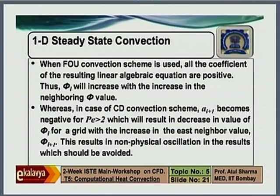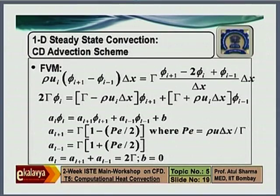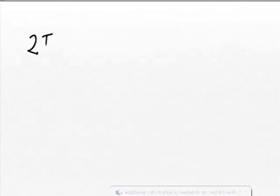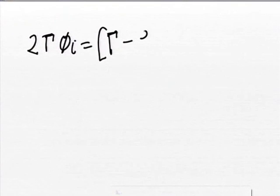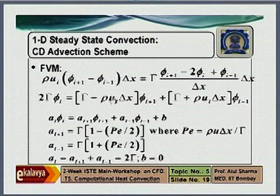Any other question? According to the conditions, they will be changed — in slide topic number 5, slide 21, the condition should be if the Peclet number is greater than 1, it should be like that. Oh no. Let me put it on the whiteboard and show you. Let me do one thing — I will come back to this in tomorrow's lecture.